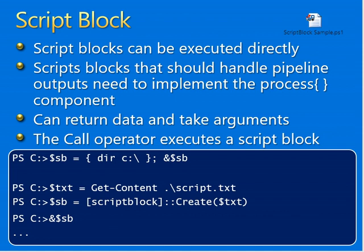The sample code shows an example of a script block structure you can use to check the components — beginning, process, and end — where the process component executes for each pipeline input. The example will list all the process objects using the Get-Process command and pass them through the script block, helping us understand how the script block works.